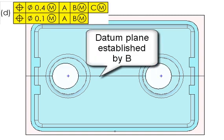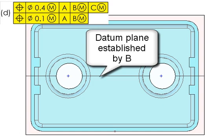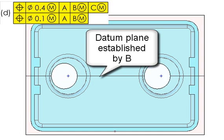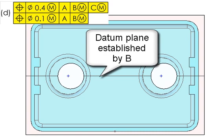The last feature control frame is called two single segments. Notice there are two position tolerances. This is controlling the location between the holes, the perpendicularity to A, and the location to B within .1. The pattern can float relative to the plane established by C within .4.